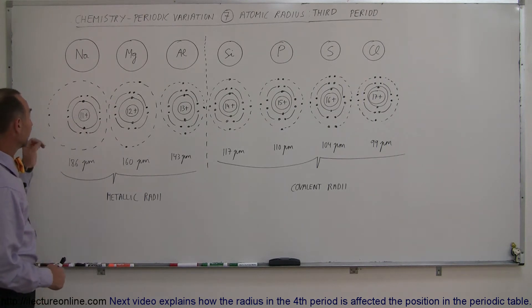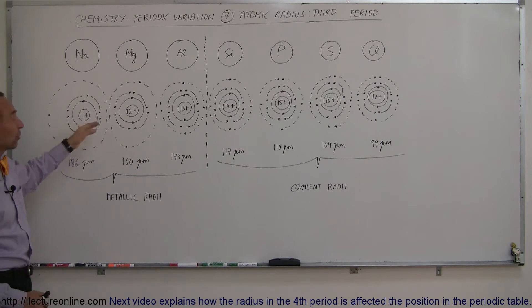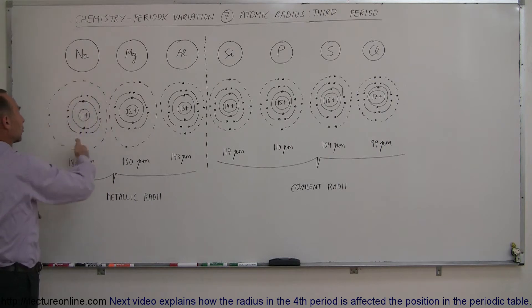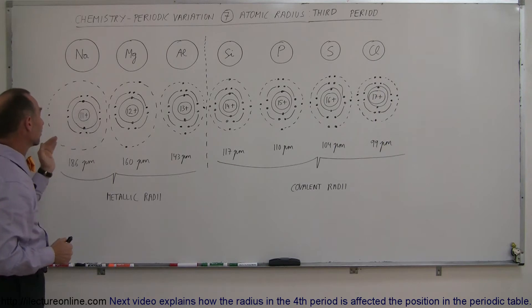Now notice that in the third period we have the inner portion of what we call the neon elements. Neon has ten protons in the nucleus and ten electrons around it. Of course when we go to sodium we have eleven protons and one more electron which has no room in the second energy level and must reside in the third energy level.